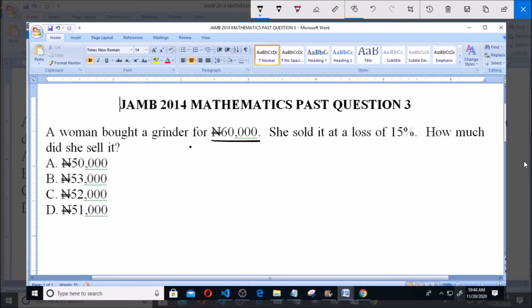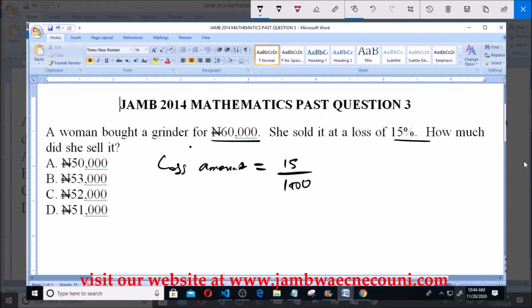If the woman bought the grinder for 60,000 naira and she sold it at a loss of 15%, let's calculate the loss first. The loss amount is equal to 15%, that is 15/100 multiplied by the actual amount.